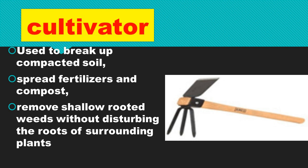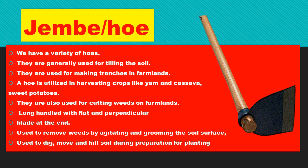The hoe or jembe comes in a variety of types and is generally used for tilling the land. It is used for making trenches in farmland and for harvesting crops like yam, cassava, sweet potatoes, Irish potatoes, and arrowroots. It is also used for cutting weeds on farmland. It has a long handle with a blade perpendicular at the end and is used to remove weeds and to dig, move, and mound soil during preparation for planting. Thank you for listening.